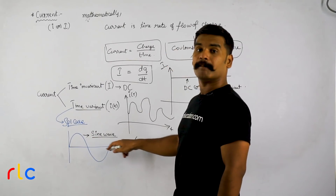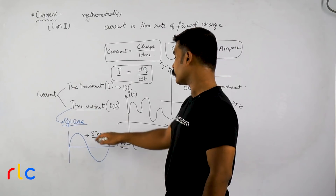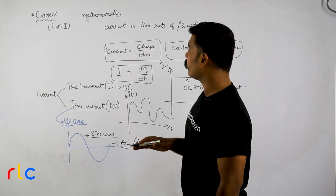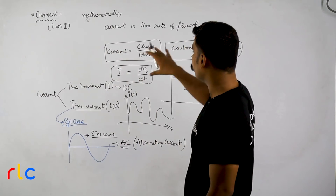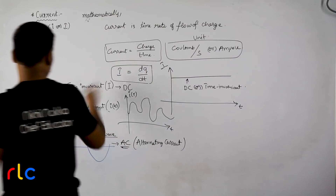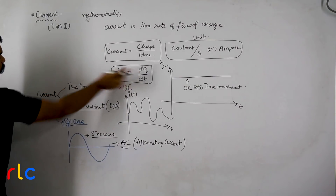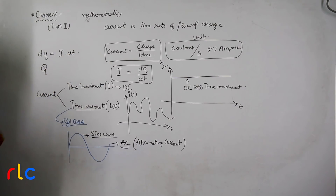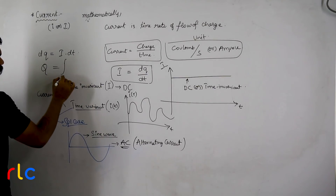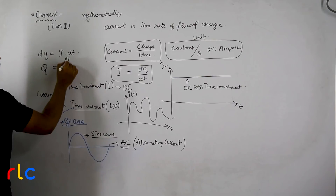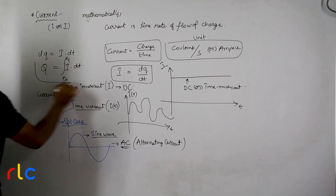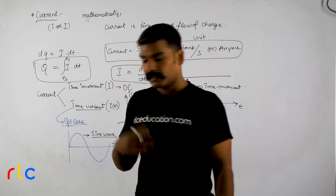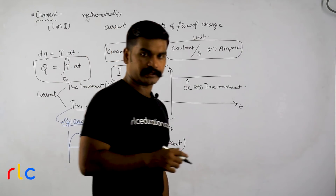To summarize: DC is time invariant current (constant value, capital I); AC is a time variant current that varies sinusoidally (small i or i(t)). To find total charge from current, we manipulate I = dQ/dt: dQ = i·dt, so integrating both sides gives Q = ∫i dt from t₀ to t₁, which gives the total charge transferred in that time span. In the next session, we will solve problems based on current.